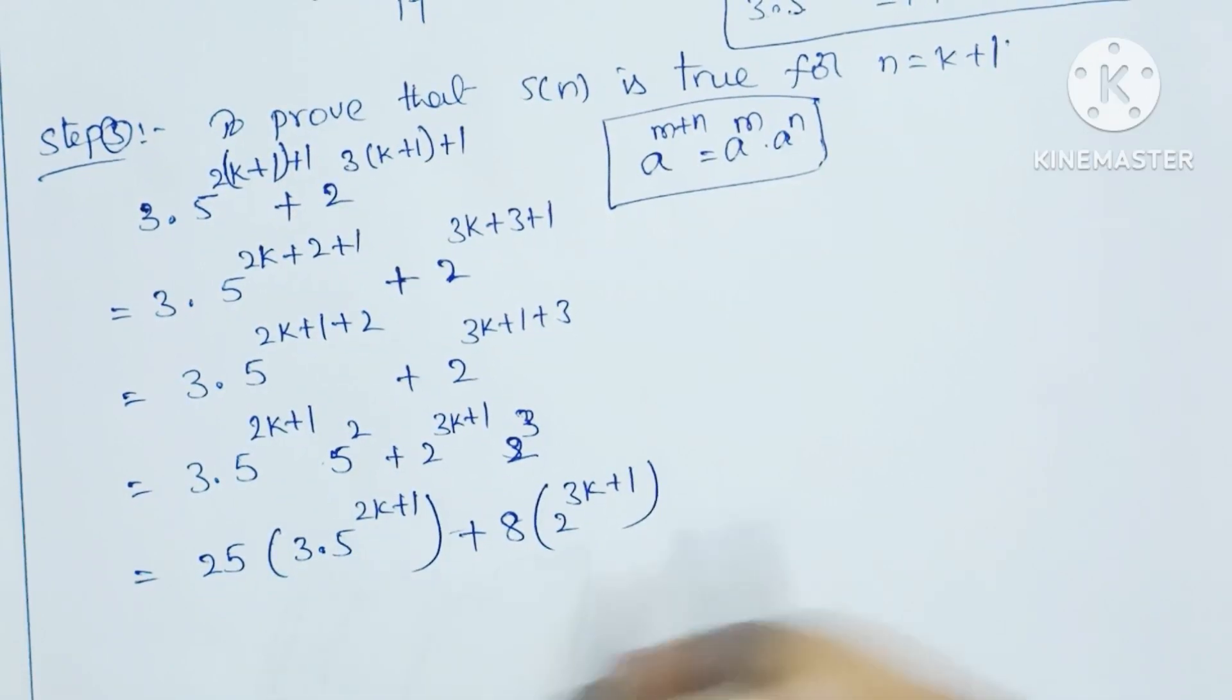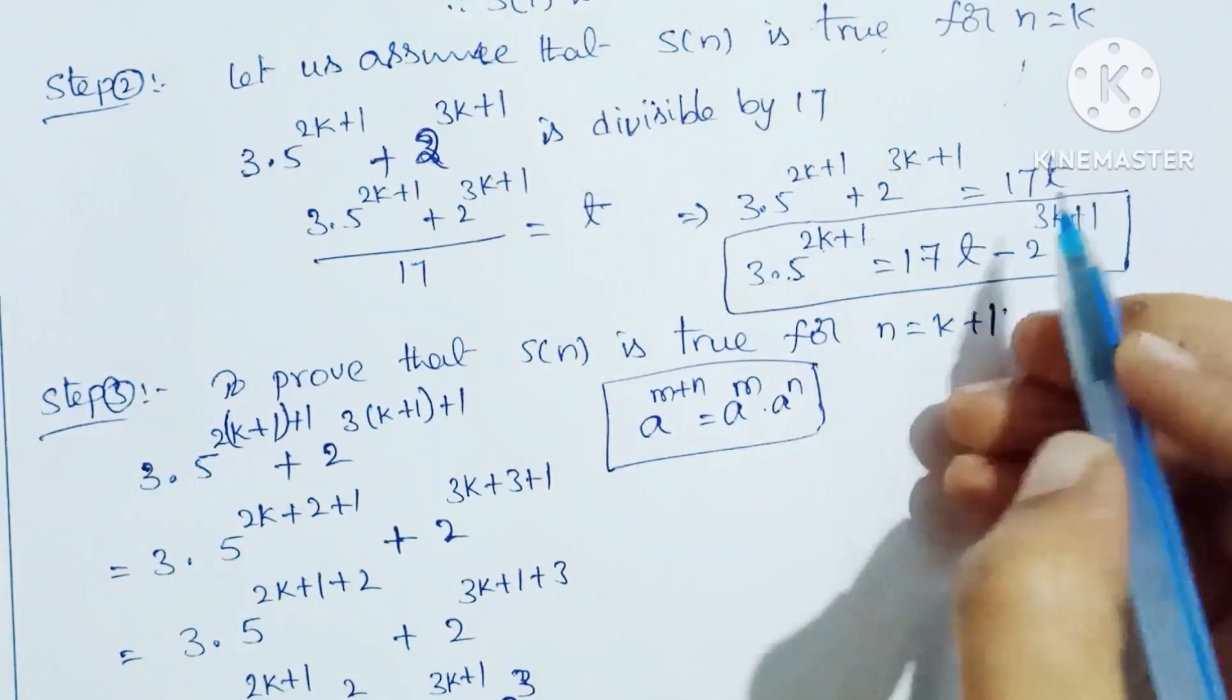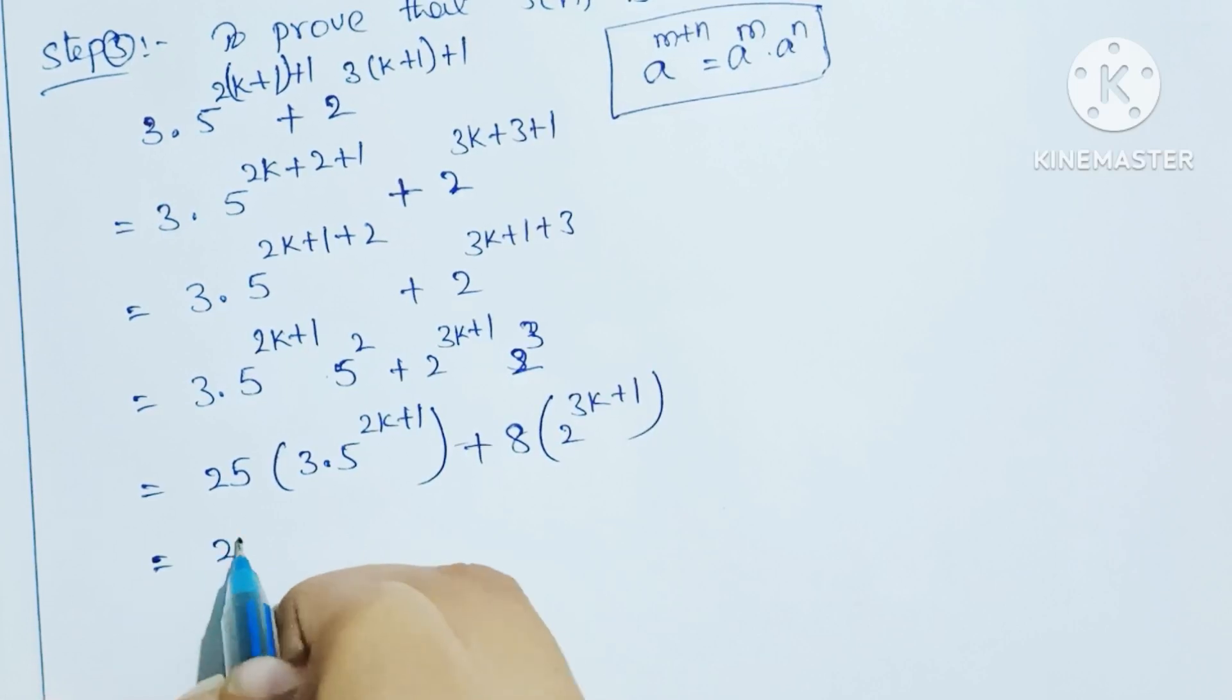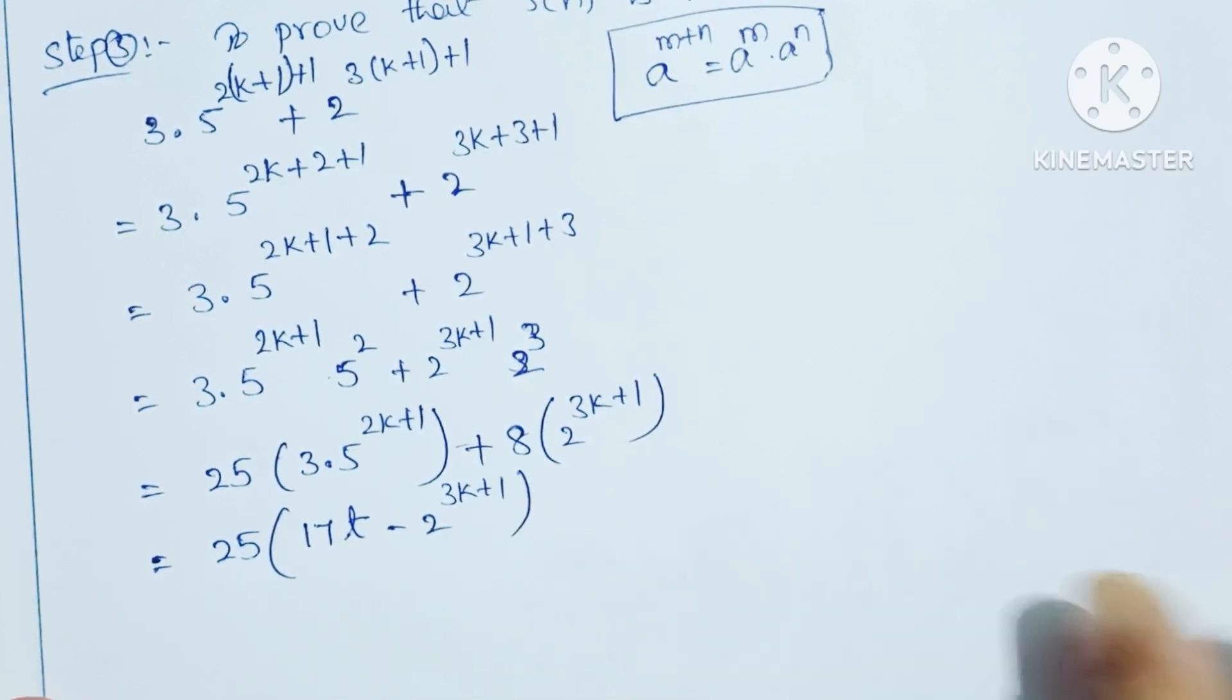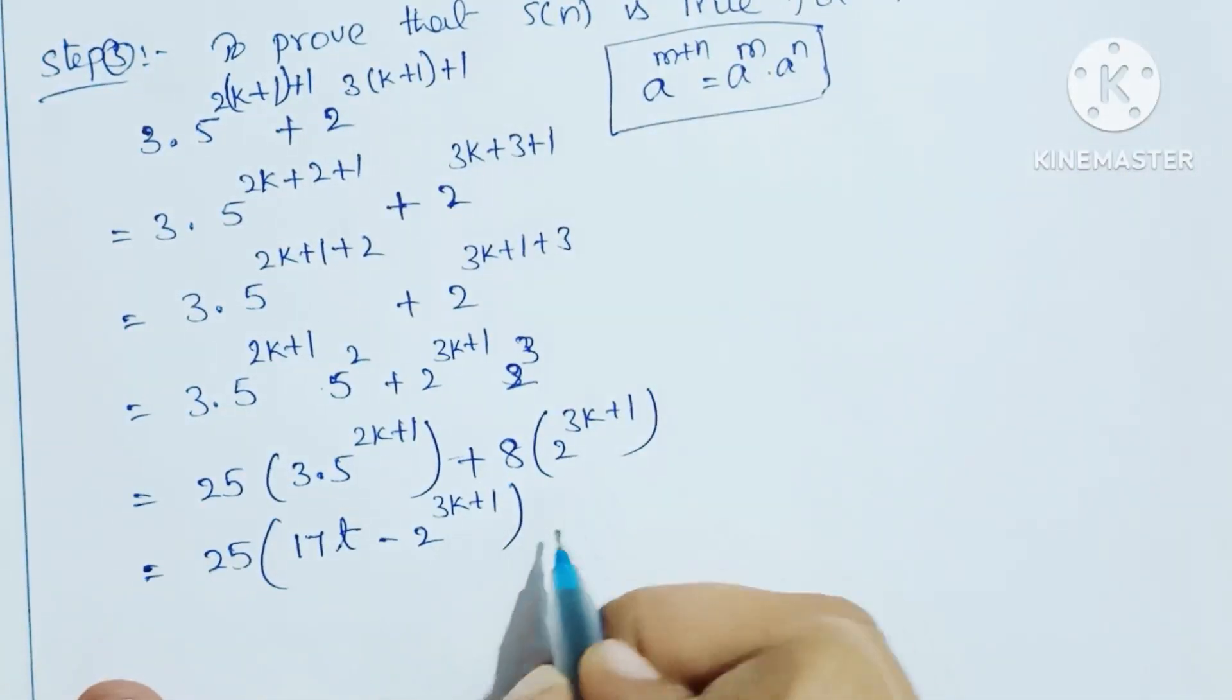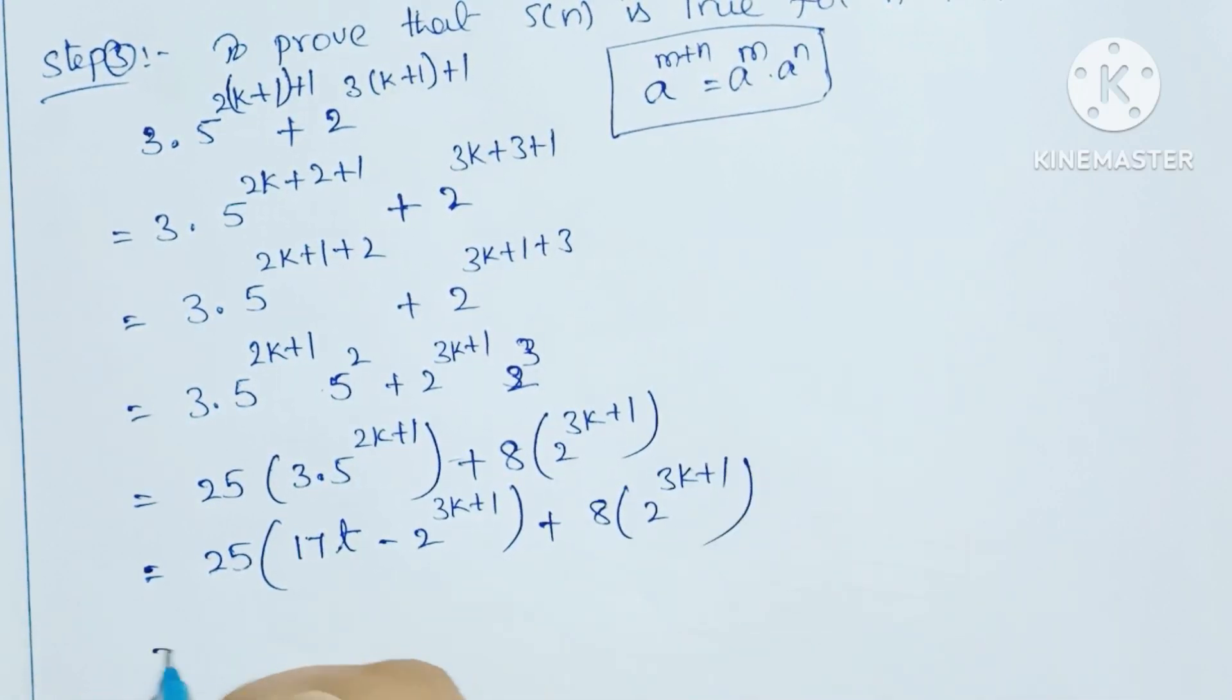This value 3 into 5 power 2k plus 1 from step 2, we substitute: 25 into 17t minus 2 power 3k plus 1, plus 8 into 2 power 3k plus 1.